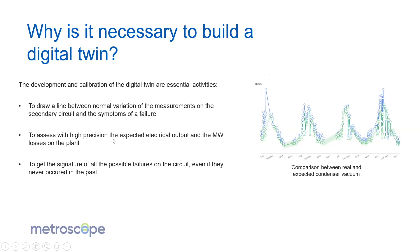It also allows us, since we work a lot with power generation clients, to assess with high precision the expected electrical output — because that's what the client cares about, that's what earns them money. Our clients want to know what megawatts they are losing because of a failure so they can target which maintenance activities are most urgent. And finally, if you want to recognize failures, you need to model them. With statistical modeling, you cannot recognize failures that never happened. But with physical modeling, if we understand a failure, we can model it, get its signature, and recognize it in the future — even if it never happened and the client has no expert on-site.